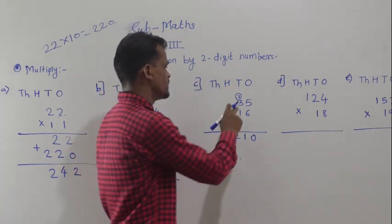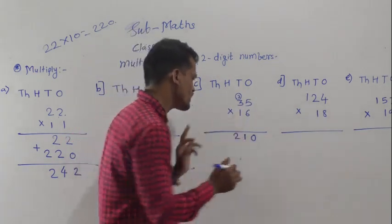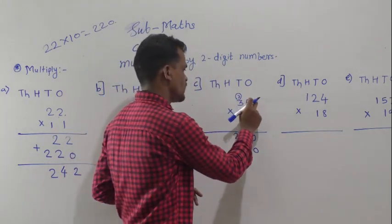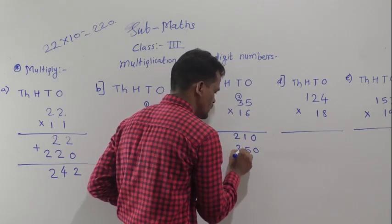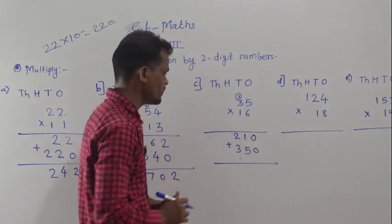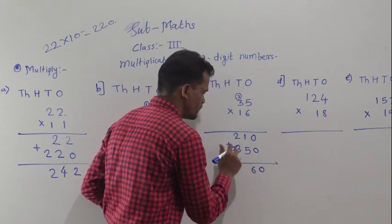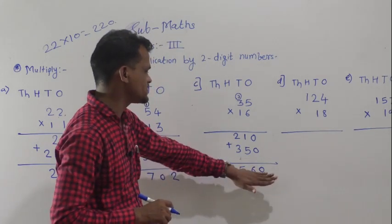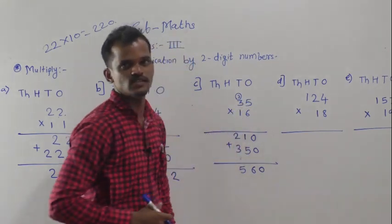Next step: multiply 35 by 10. Before multiplying by 1, write 0 at the ones place and then multiply 35 by 1. 1 five is 5, 1 three is 3. Then add the 2 numbers: 0 plus 0 is 0, 1 plus 5 is 6, 2 plus 3 is 5. So 516 is the product of 35 and 16.